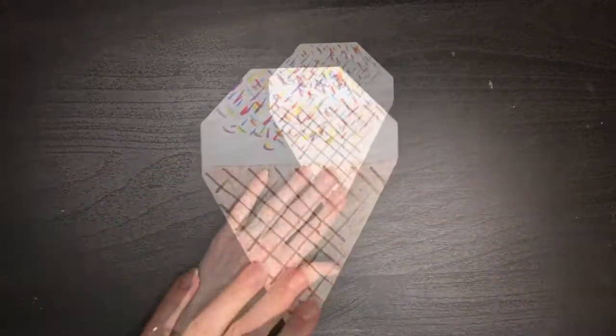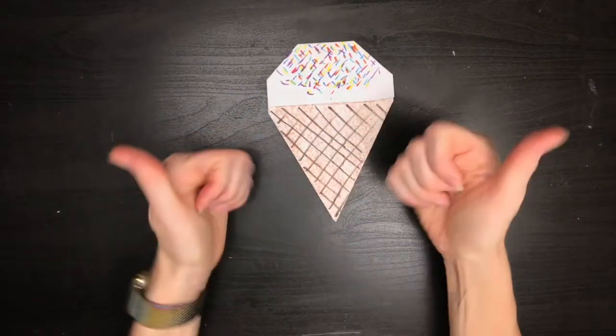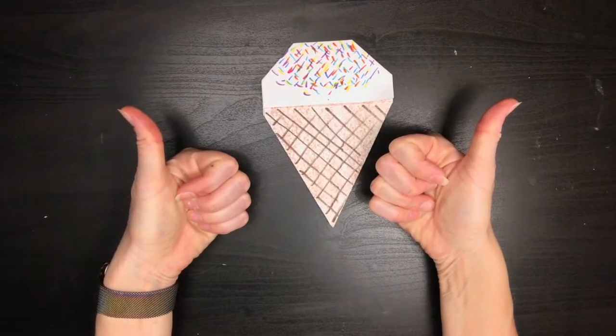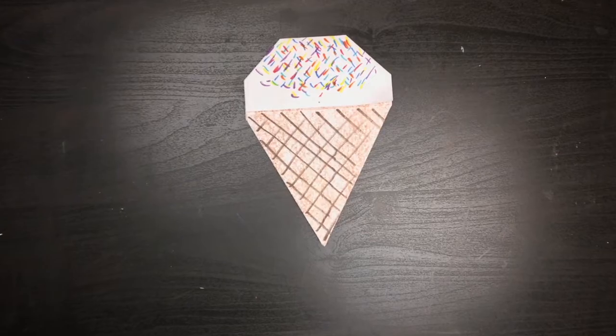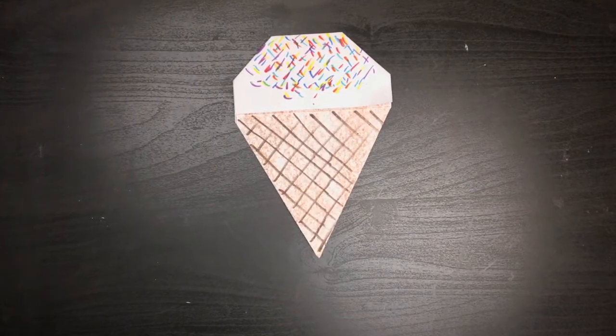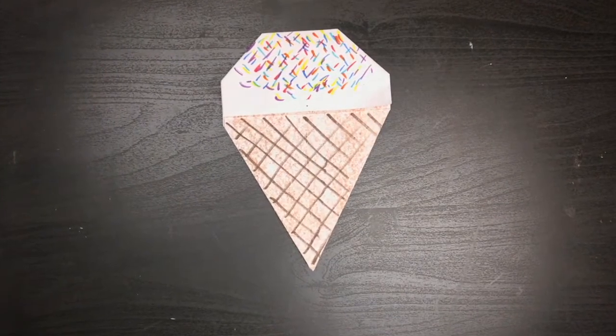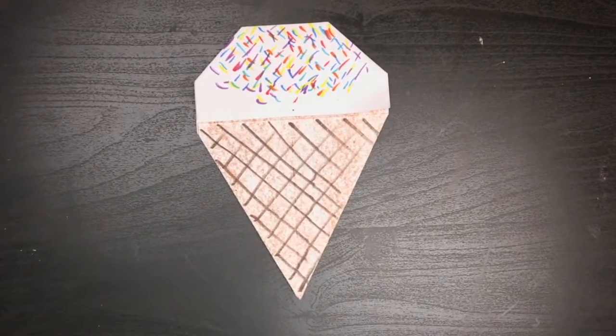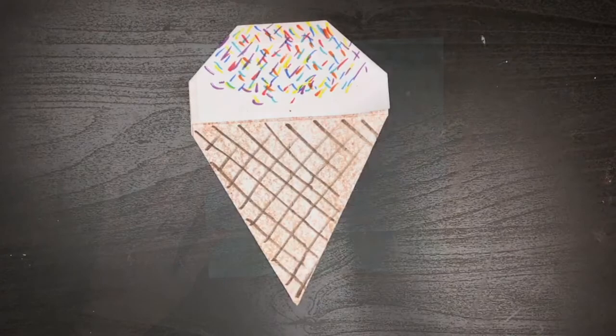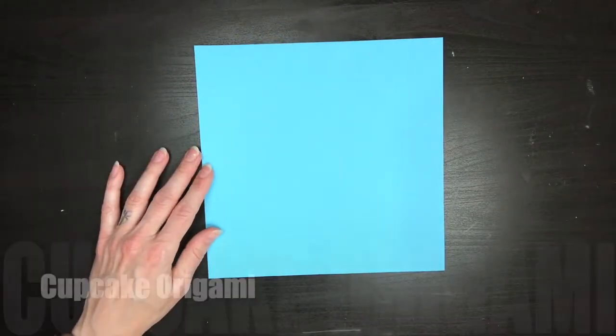Now, before you call it quits on your ice cream cone, don't forget we had cut this paper in half to begin with. So, you actually have another piece of paper that's already ready to go to make a second ice cream cone. So, if you want to rewind the video and do the steps again, you definitely could. You actually have another piece that's ready to go.